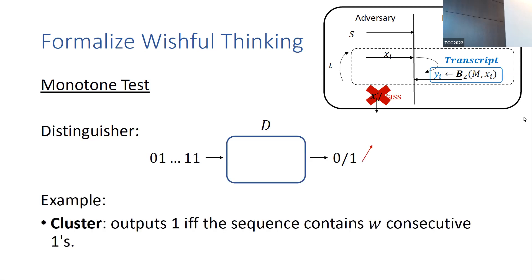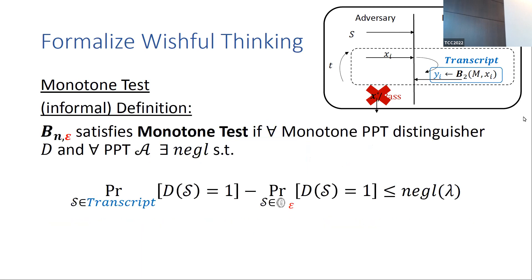In this test we add another component: a distinguisher, which is a function that gets a sequence of bits and outputs either 0 or 1. But we consider only monotone distinguishers, meaning that if we flip a bit in the input sequence from 0 to 1, the output can only increase. One example is the cluster distinguisher, which outputs 1 if and only if the input sequence contains some predefined number of consecutive ones. The bloom filter satisfies the Monotone Test if for every monotone distinguisher and every adversary, the probability that it can distinguish between the bloom filter transcript and a random biased coin transcript is at most negligible.